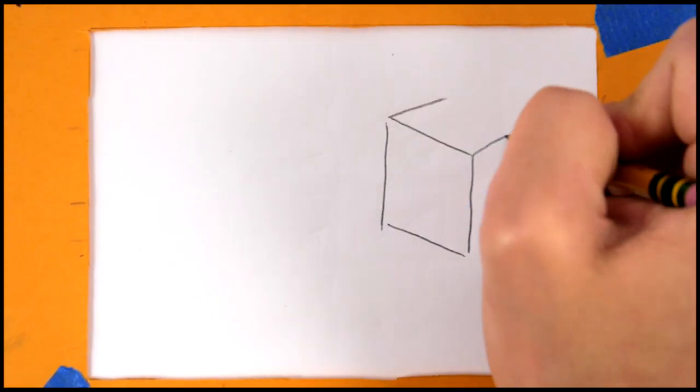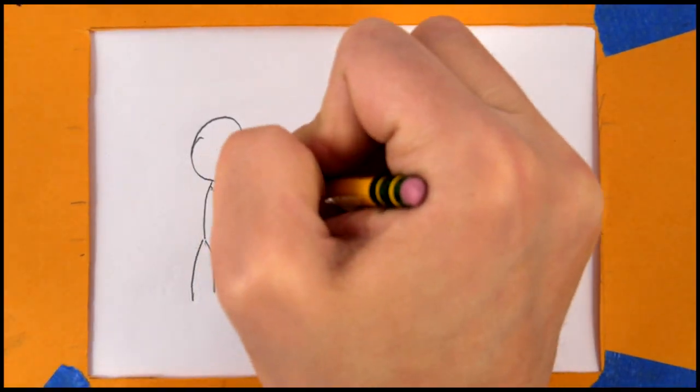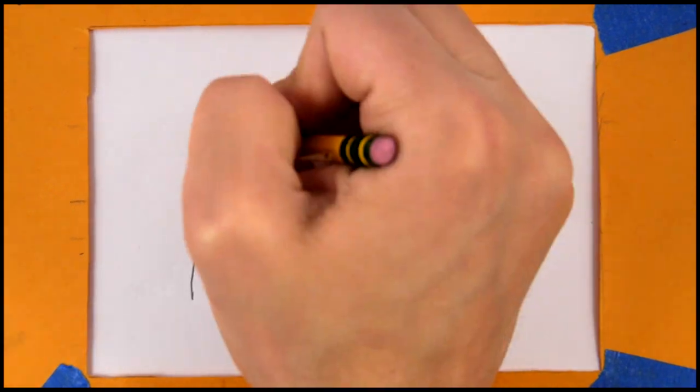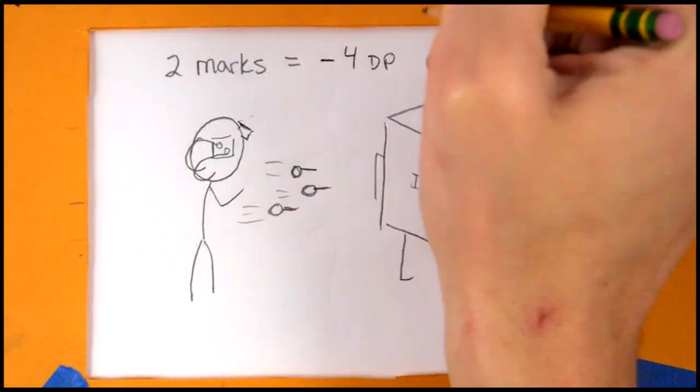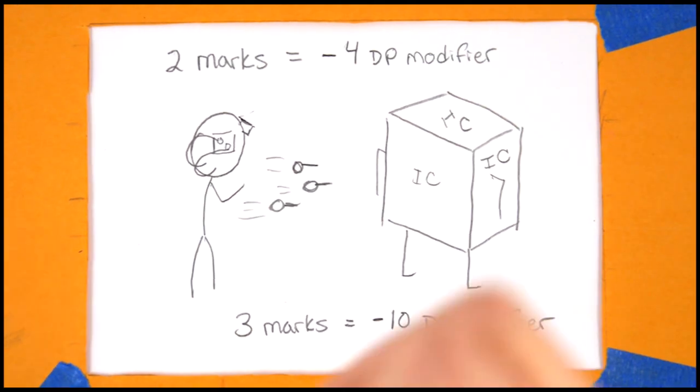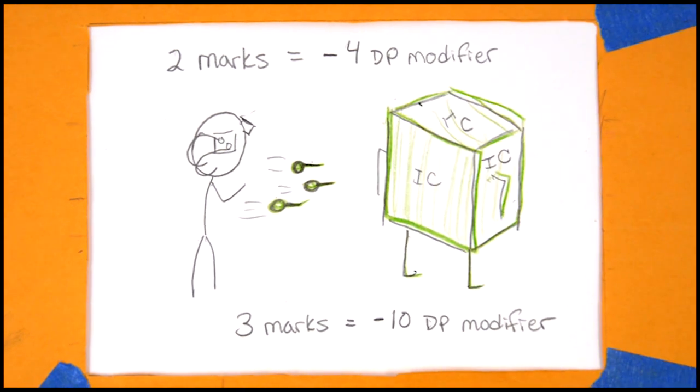A hacker can attempt to place multiple marks on a target with one complex action. This, as one would expect, is more difficult. Using a brute force or hack on the fly action to place two marks at once imposes a minus four dice pool penalty, and three marks at once causes a minus ten dice pool penalty.